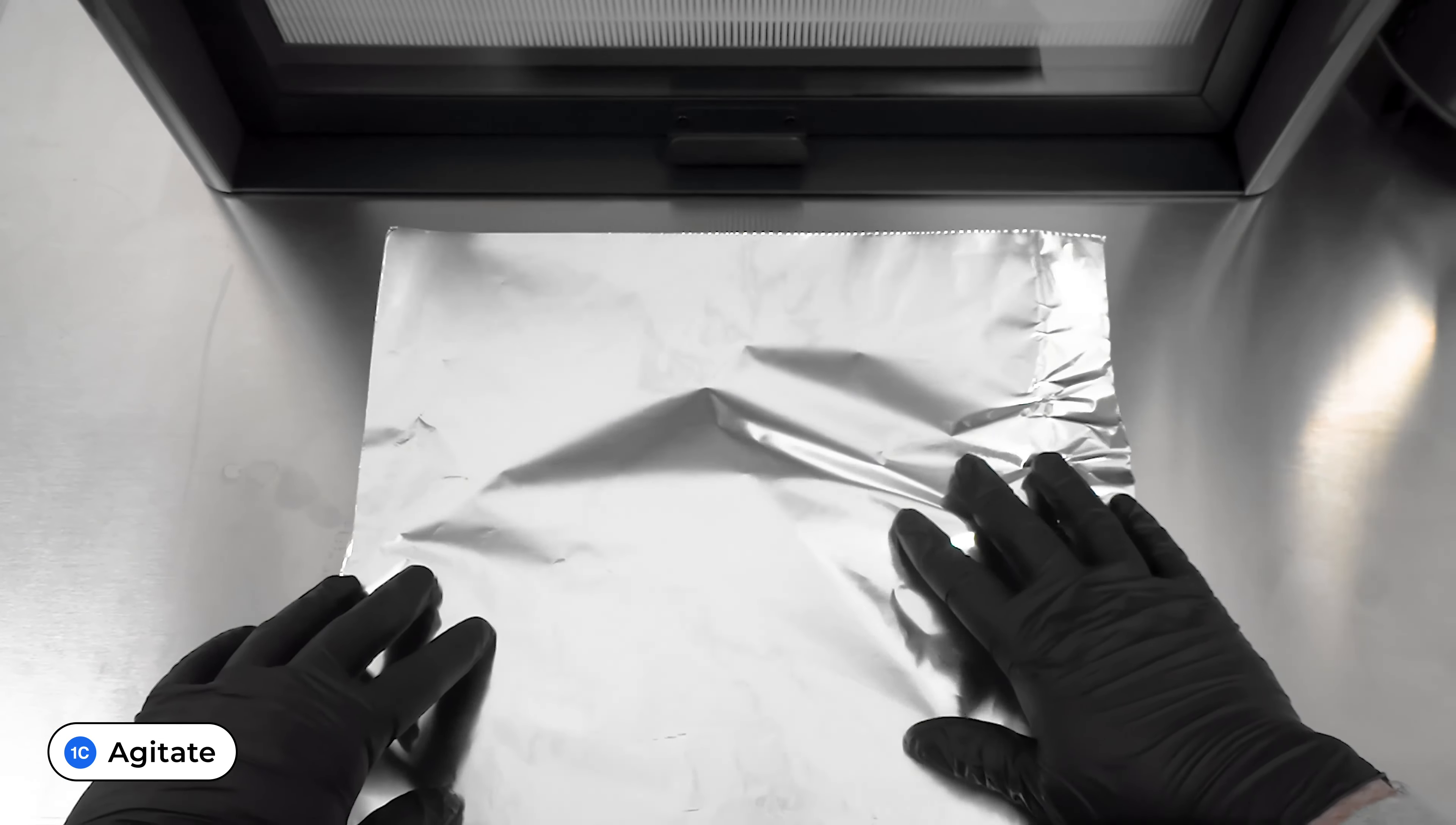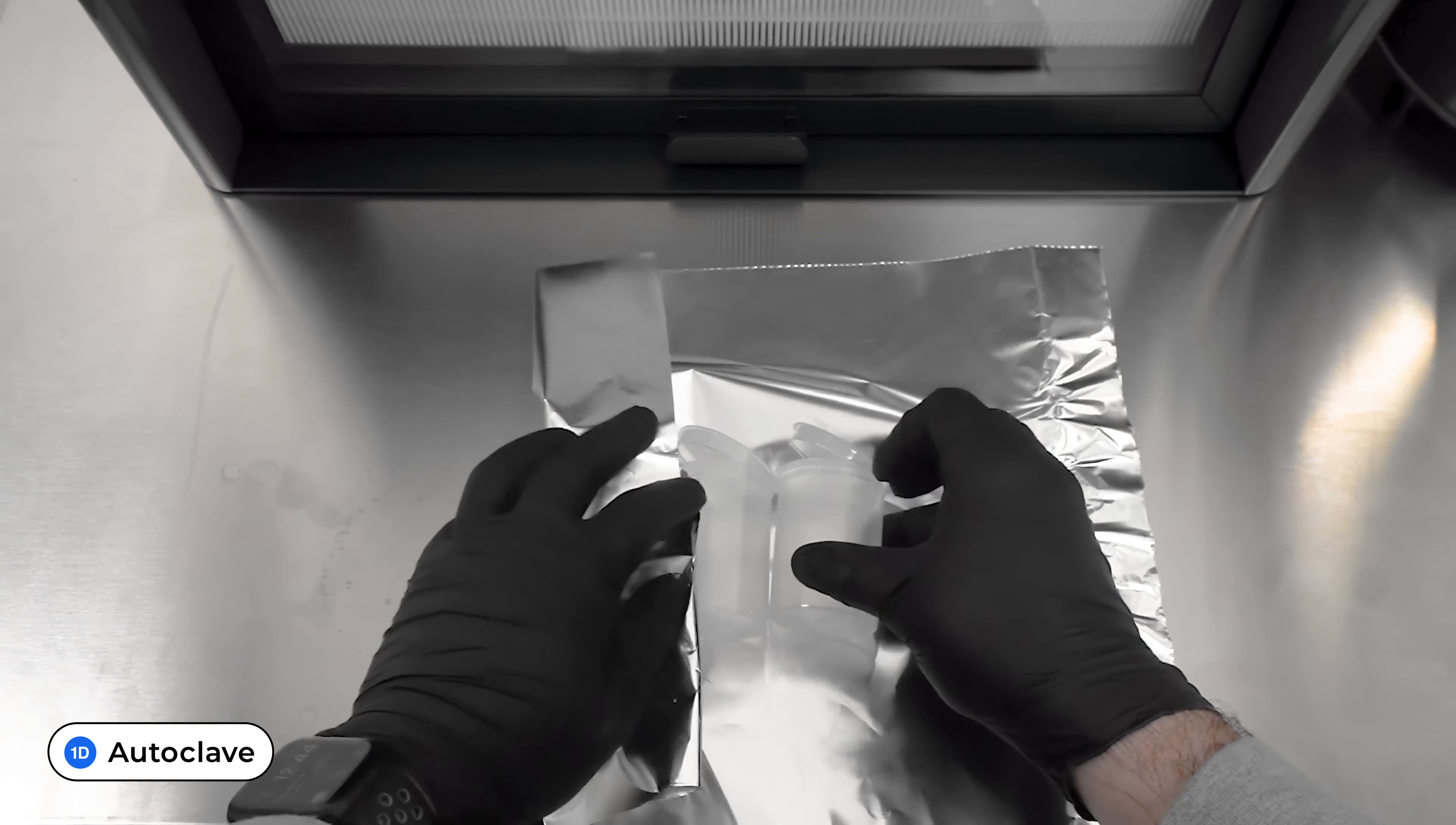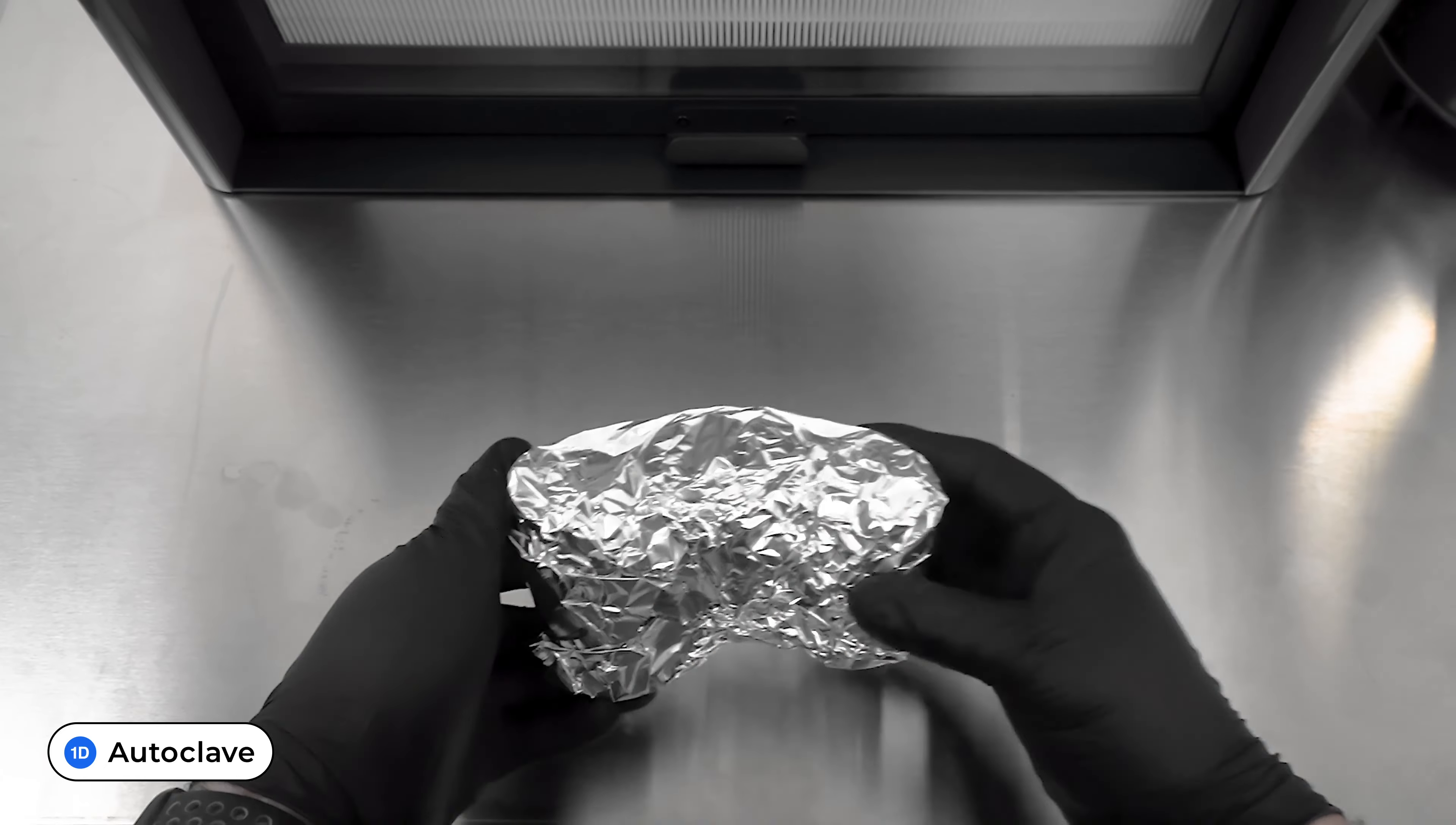For autoclave use, culture vessels should be wrapped in foil prior to sterilization. Once sterilized and covered in foil, they can be put aside for future use.